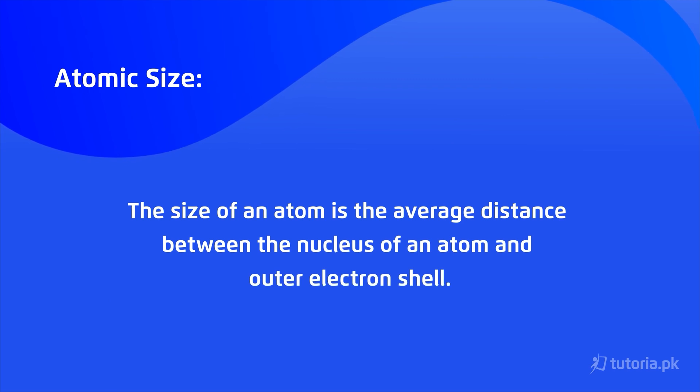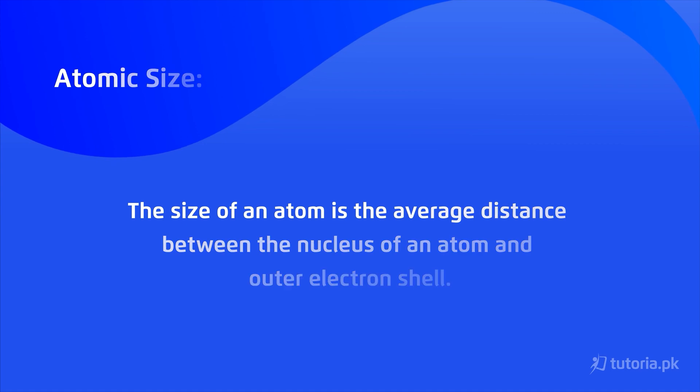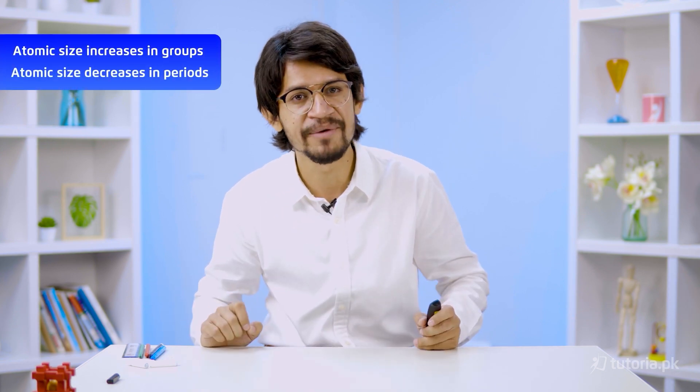We cannot find the exact atomic size of an atom because there is no clear boundary. Scientists joined two atoms and measured the nucleus-to-nucleus distance, then divided by two to get one atom's radius. So we say: the size of an atom is the average distance between the nucleus of an atom and its outer electronic shell. Atomic size increases along groups and decreases along periods.